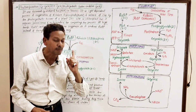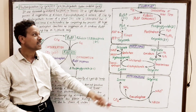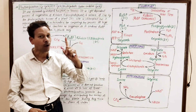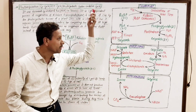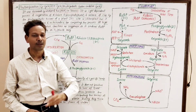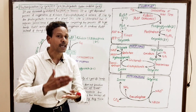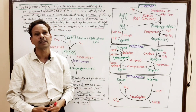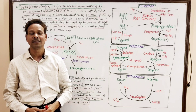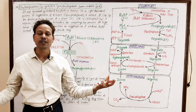Photorespiration means respiration associated with photosynthetic tissues. This photorespiration — the C2 cycle or PCO cycle, photosynthetic carbon oxidative cycle — is a characteristic feature of C3 plants only. Note this down, for all competitive exam students and BSc students.